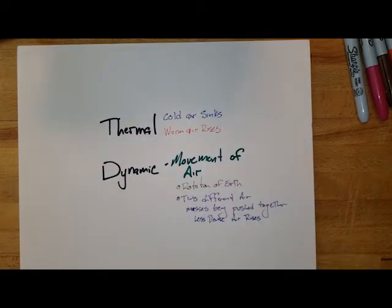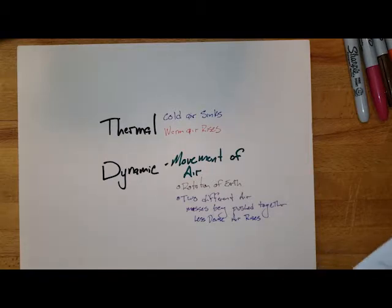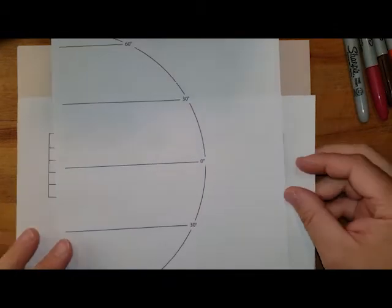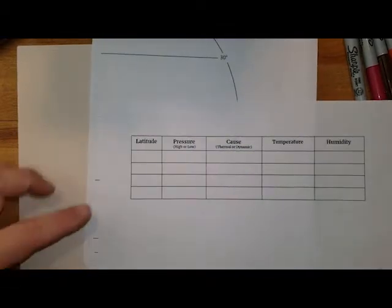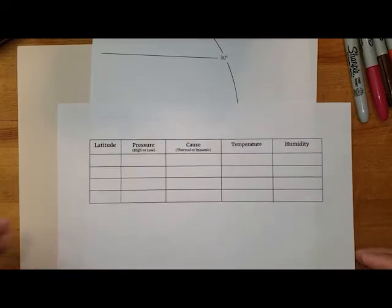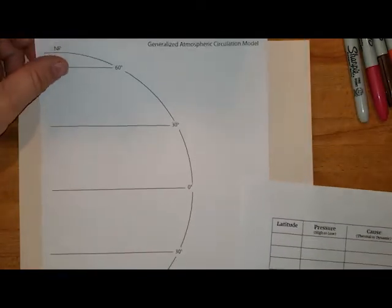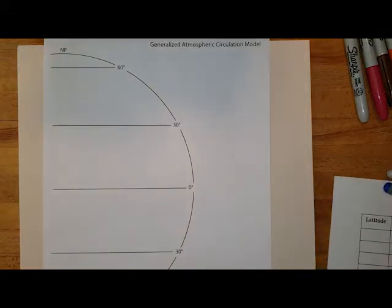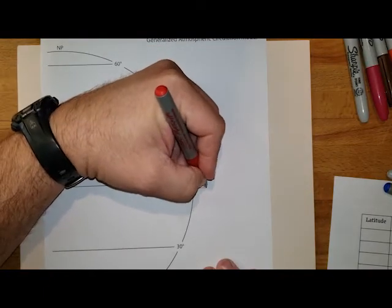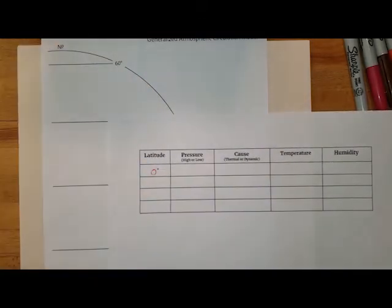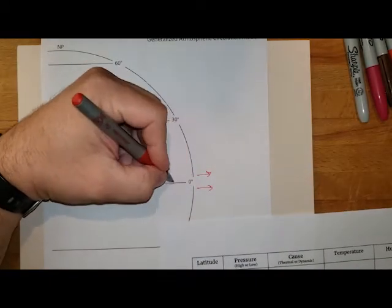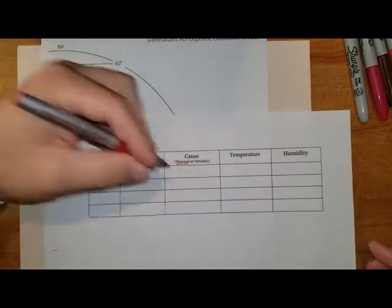Let's look at where on Earth this is happening. With the general atmospheric circulation model, we want to understand how it affects different latitudes. The first thing we know is that warm air rises, and that's going to be hottest at the equatorial area, so air at around zero degrees rises off the surface, creating a low pressure system. This is thermal because it's due to temperature.